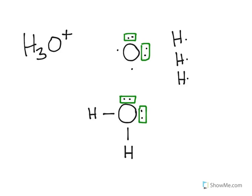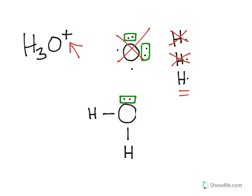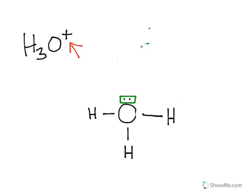I've got the oxygen done, and two of the hydrogens done. There's one extra hydrogen — I need to figure out where to put it. The plus sign tells me I take out one electron, so I'll remove one of those electrons on this side — it's no longer a lone pair. That makes it easy: I put the hydrogen right here, align it, and connect those dots. There it is — that's my hydronium ion structure.